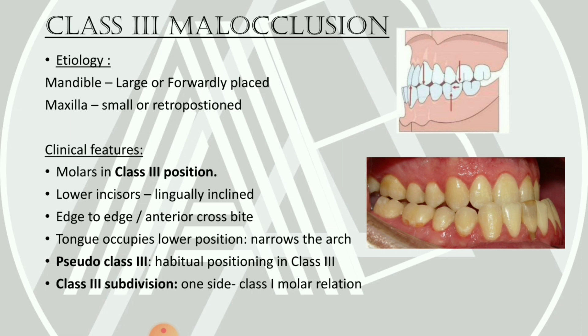The lower incisors in Class 3 malocclusion are usually lingually inclined or might be straighter, and there is usually an edge-to-edge or anterior crossbite present. The tongue also occupies a lower position, similar to Class 2 Division 1, producing a similar effect — narrowing of the maxillary arch.